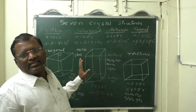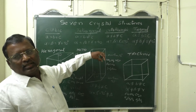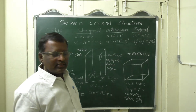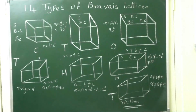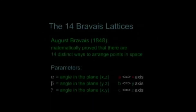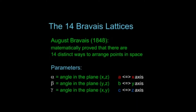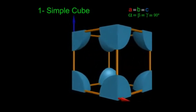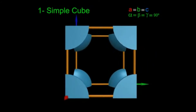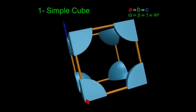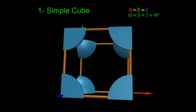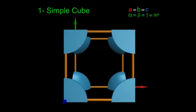These are the seven basic structures, and based on lattice points, there are 14 Bravais lattices possible from them. The parameters are: sides called a, b, c and angles called alpha, beta, and gamma. The first is a simple cubic lattice where a = b = c and alpha = beta = gamma = 90°. It is a primitive cell with particles present only at the corners.